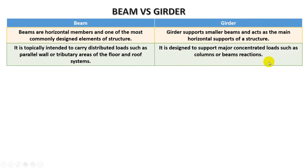The girder carries concentrated loads — that is the big difference. A girder carries concentrated loads, but a beam carries uniformly distributed loads, such as column slots and beam reactions.